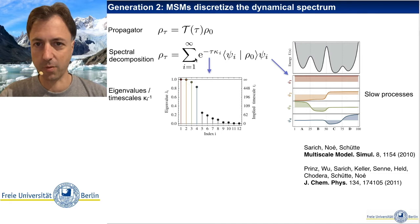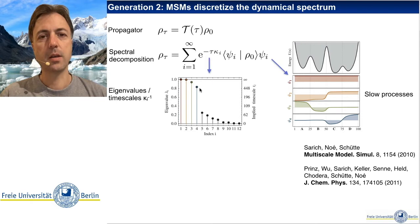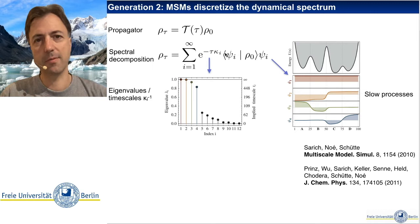These eigenvalues can be translated into timescales or rates via the relation where kappa is the rate, so close to one means a small rate. We therefore have three slow relaxation processes with small relaxation rates. These are actually physically measurable rates — for example, in fluorescence correlation spectroscopy we can measure them.